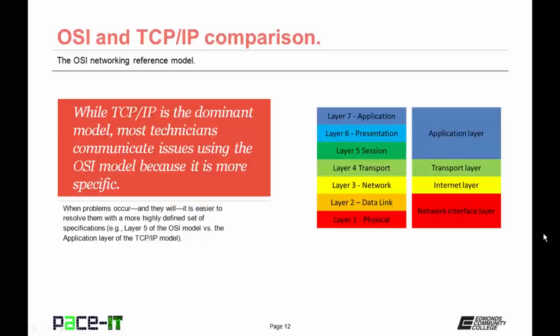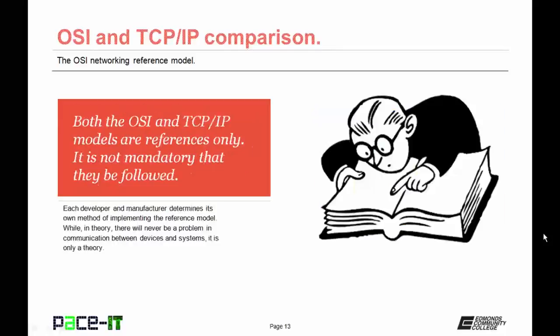It's easier to resolve an issue at the session layer of the OSI model than to track down what went wrong in the application layer of the TCP-IP model. Both OSI and TCP-IP models are reference models only — it is not mandatory that they be followed. Each developer and manufacturer determines its own method of implementing the reference models.